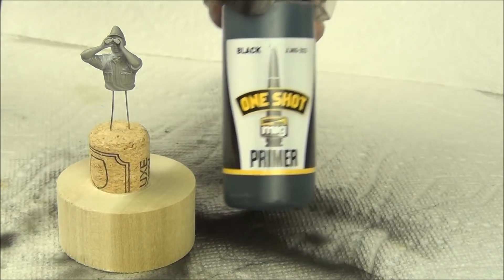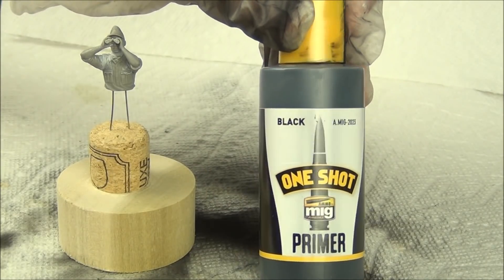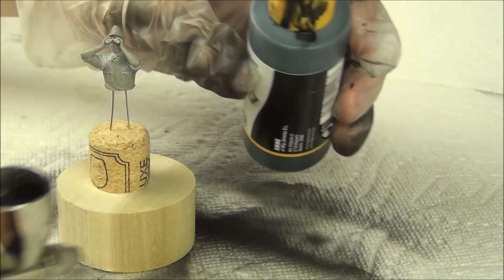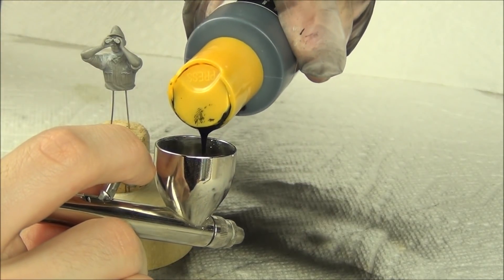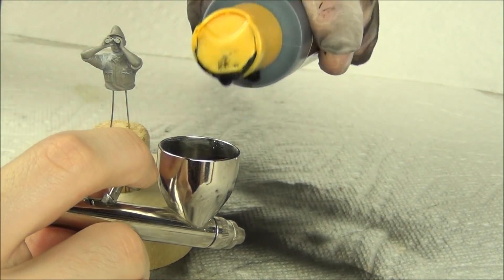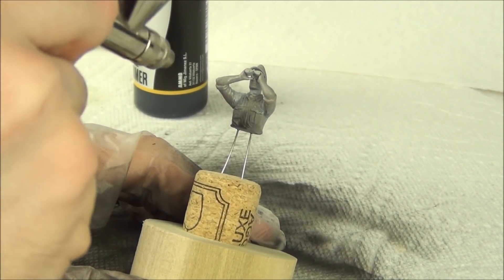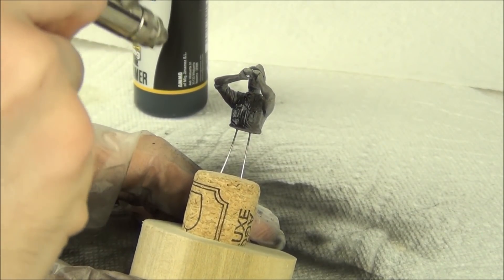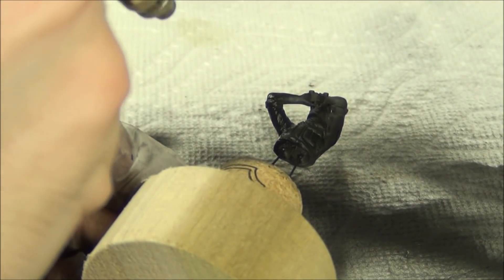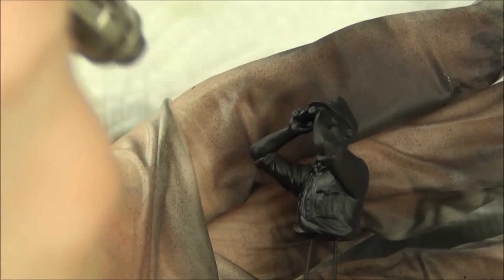I'm going to start by priming him with some black. I'm using the MIG Ammo One-Shot which is rebranded Badger Stynylrez. This is excellent primer. You pour it straight into your airbrush and then spray it on at like 20-25 psi. Coverage is great and it really flattens out once it's dry. It's the ultimate primer.